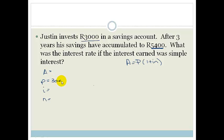So let's continue with this. We say that Justin invests 3,000 Rand, so his principal is 3,000 Rand. After three years, his savings has accumulated to 5,400. So that means that the number of years is three, and he has accumulated 5,400 Rand. And they want to know what is his interest. So if we fill it in here, we've got 5,400 equals the principle of 3,000 times by 1 plus I times by 3. So what I would do is I would basically divide out the 3,000. There are lots of ways you can do this. You can either multiply this out first and then take it across. I'm going to divide both sides by 3,000.